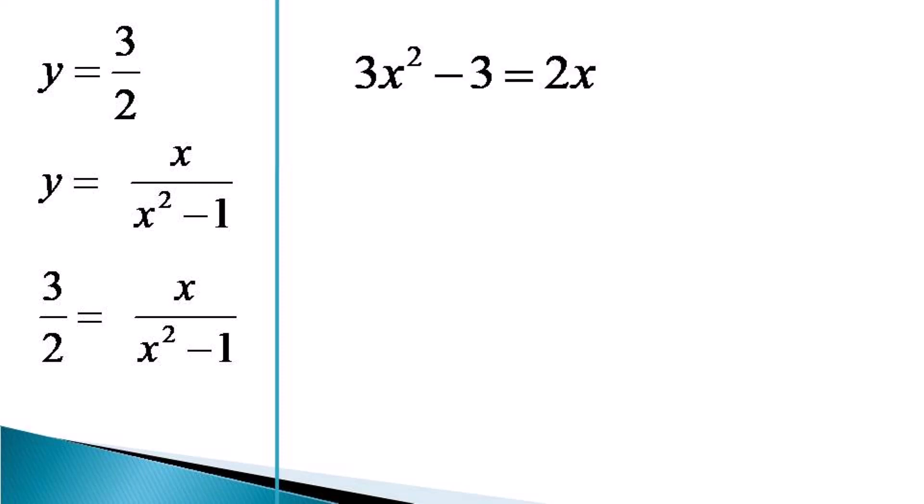Cross multiplication results in an equation 3x² - 3 = 2x, which can be written as 3x² - 2x - 3 = 0.